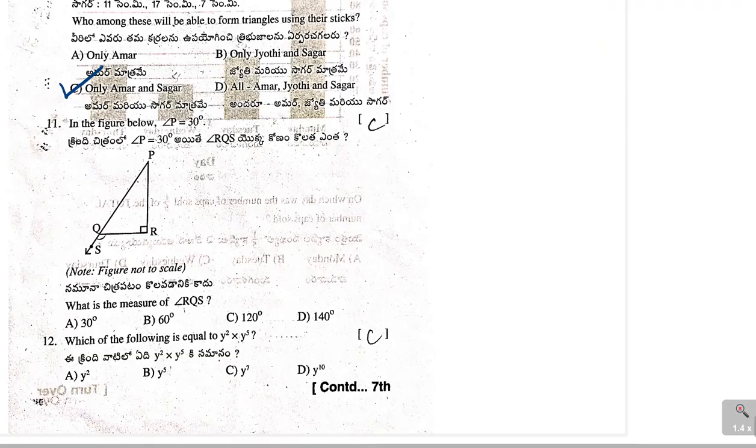Next, eleventh one, in the figure below angle P equal to 30. Given that this is 90 degrees, we need to find out what is the measure of angle RQS. RQS, that means this is what we need to find out. This is exterior angle and exterior angle equals to sum of two remote interior angles. So, this angle will be equal to 30 plus 90 which is equal to 120 degrees. So, option C is correct.